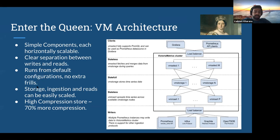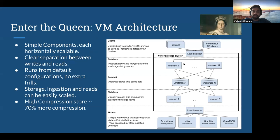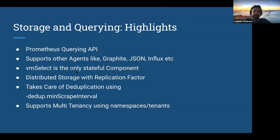VictoriaMetrics runs from default configuration — no extra configuration required for storage, ingestion, or reads. The best DRP from VictoriaMetrics on the storage side is higher compression. If you're using one terabyte of disk space with regular Prometheus, VictoriaMetrics can store the same data in around 300 GB. From the Grafana side, you don't have to add another data source — you just change the endpoint and point it to the VM Select load balancer and you're done. You don't have to change anything on your exporters or applications.